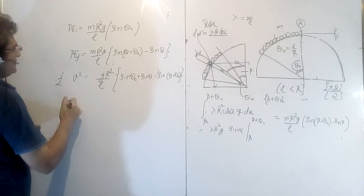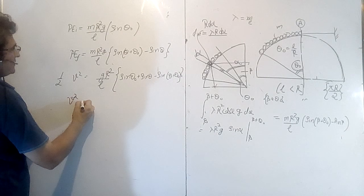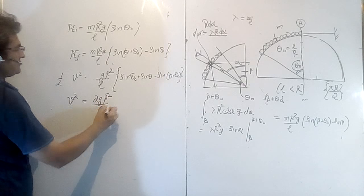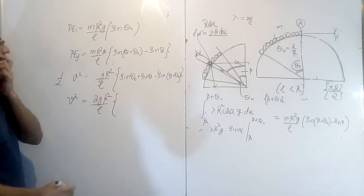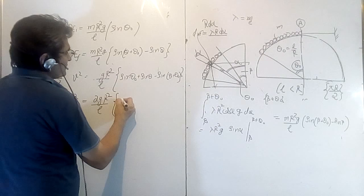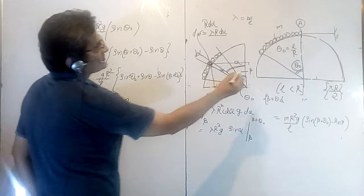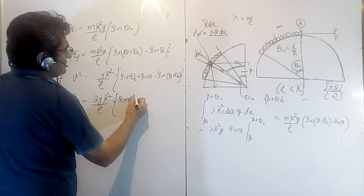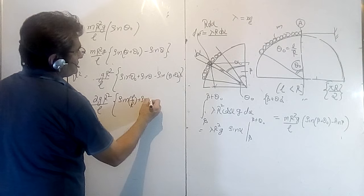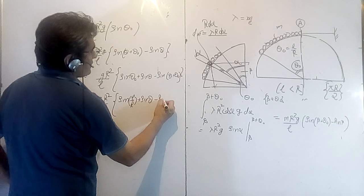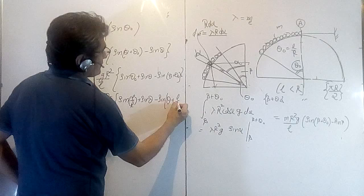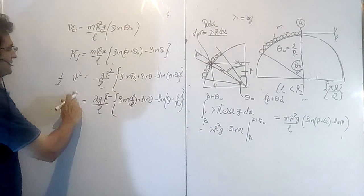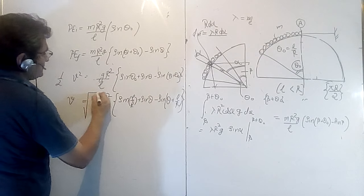So V² = (2GR²/L) · [sin(L/R) + sin(theta) − sin(theta + L/R)], since theta_0 = L/R. This is the velocity of the chain when it makes angle theta with the vertical.